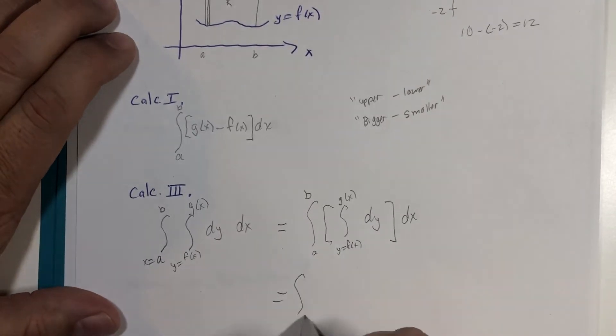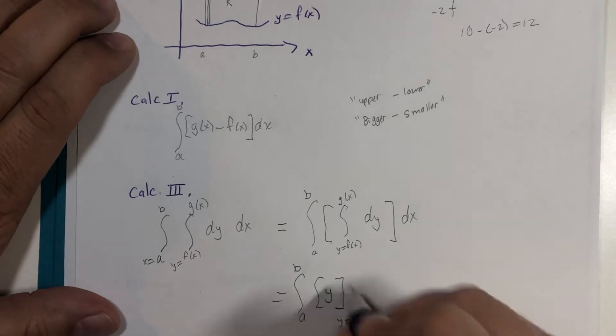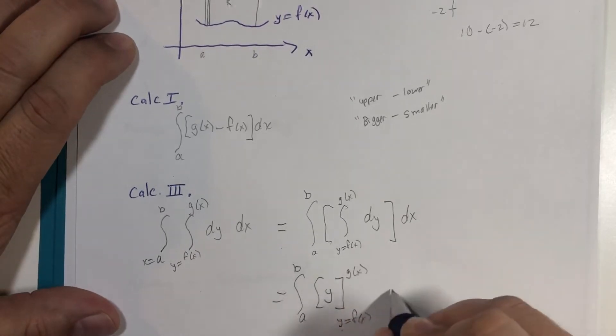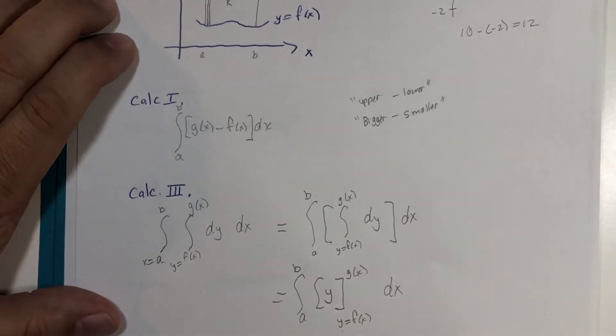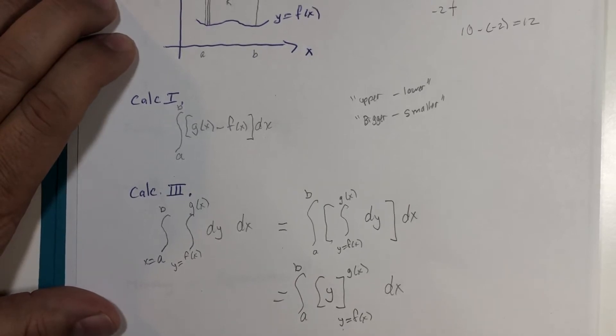The integral of dy is just y, and y goes from f of x to g of x. And according to the fundamental theorem of calculus, that would be y equals g of x minus y equals f of x.